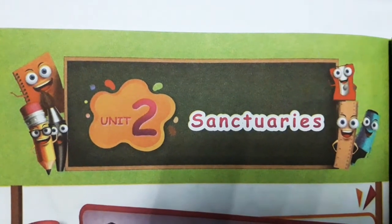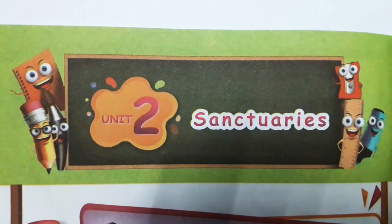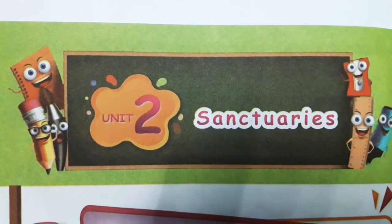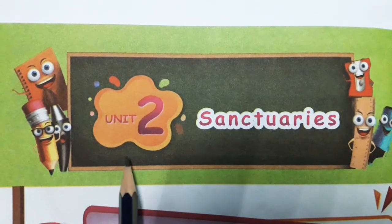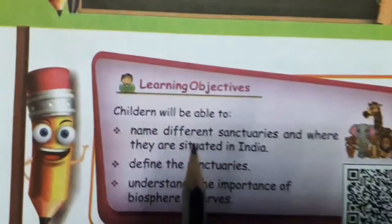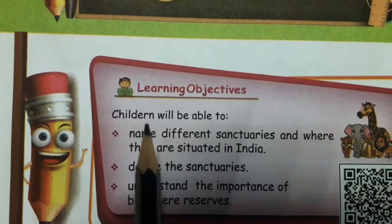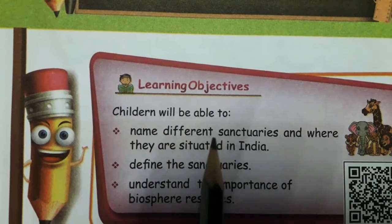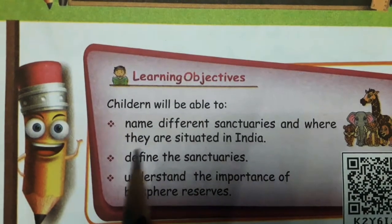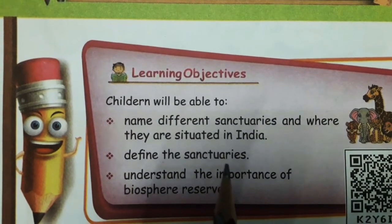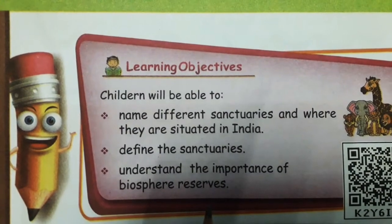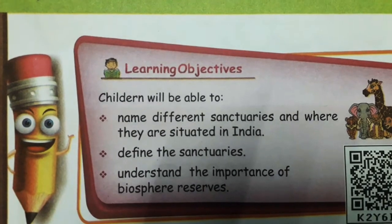Good morning children of class 3. Today we are going to learn one new lesson, that is Time Unit 2, Sanctuaries. After completing this lesson, children will be able to name different sanctuaries and where they are situated in India, define the sanctuaries, and understand the importance of biosphere resources. Ok children, let's get into the lesson.